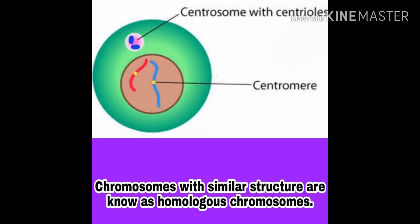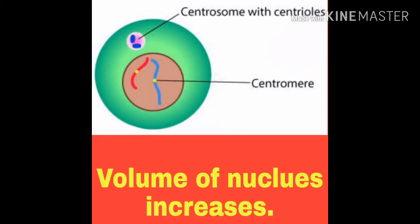Second point: chromosomes with similar structure are known as homologous chromosomes. मतलब leptotene stage में chromosome की length, centromere की position, और staining pattern same होगा, तो हम उसे homologous chromosome कहेंगे।